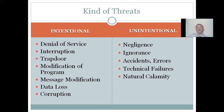Natural calamities are another form of unintentional threat. Nobody wants them, but events like floods or earthquakes can cause the system, data, or computer to malfunction. The part of the curriculum we are focusing on today involves modification of programs, code, and malware.